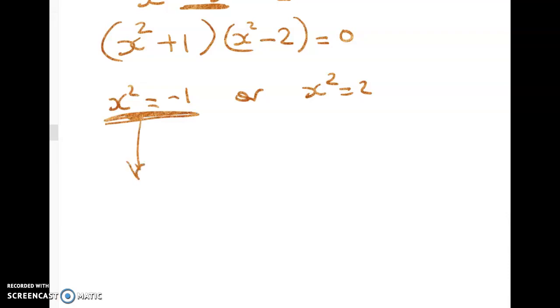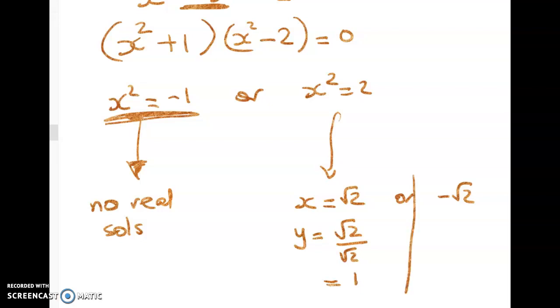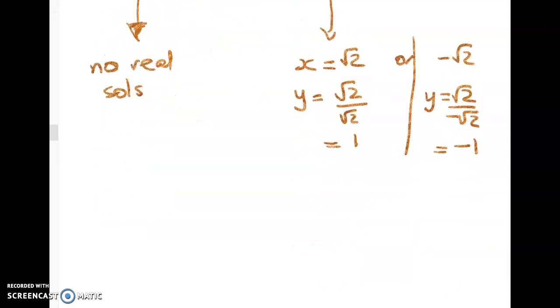And you need to make sure that you've done this pretty thoroughly. So you want a little bit of rigor. Don't just ignore this one. So this one has got no real solutions and this one has got x equals root 2 or negative root 2 and the corresponding y value will be root 2 on root 2 so y is equal to 1, y is equal to root 2 on negative root 2 which is negative 1. So that gives me two intersection points: root 2 and 1 and negative root 2 and negative 1.